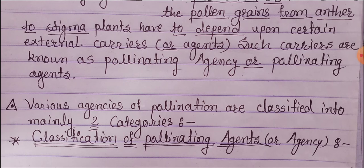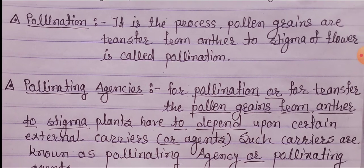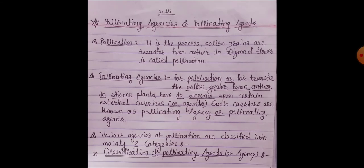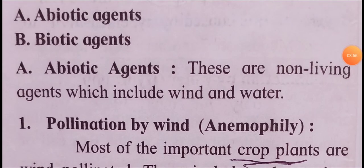We will study the classification of pollinating agencies. Various agencies of pollination are classified into two main categories. There are mainly two classifying groups: A - abiotic agents, and B - biotic agents. First, we study what abiotic agents mean.